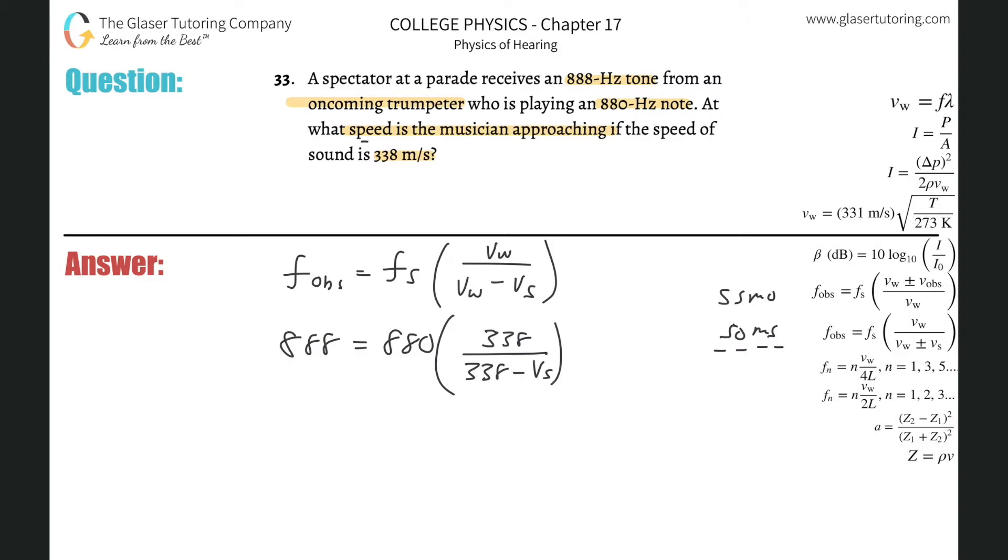And it says what speed is the musician approaching? The musician is the source. So we just got to solve this for V sub s. This is just a little math now, this is not bad at all.